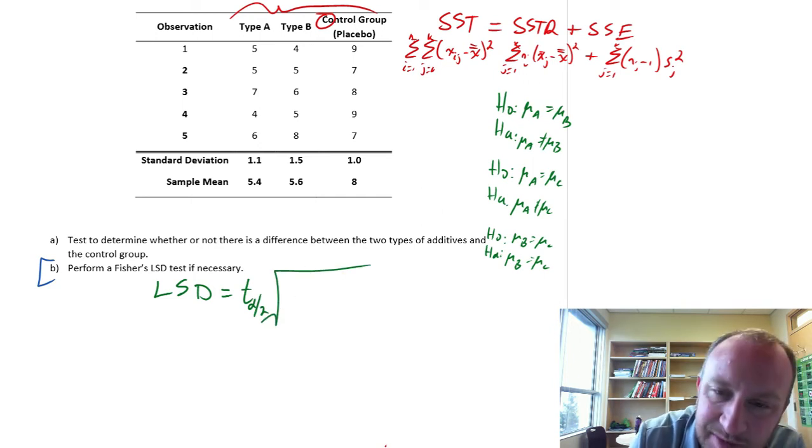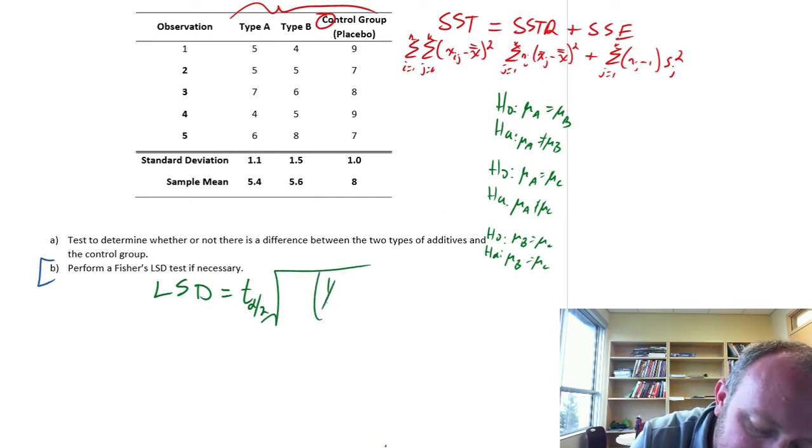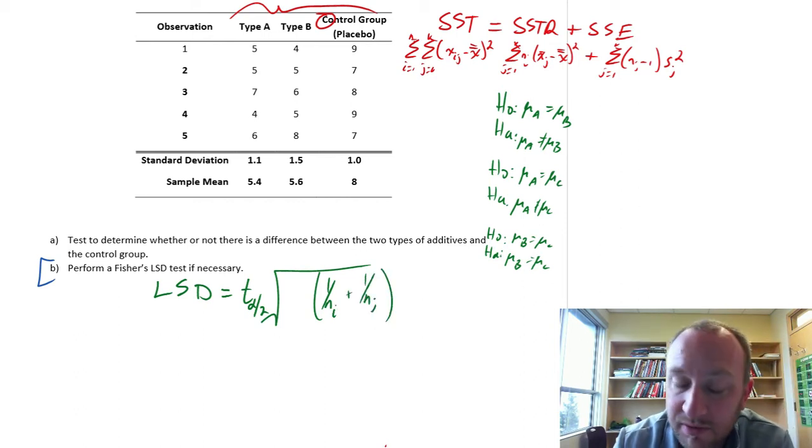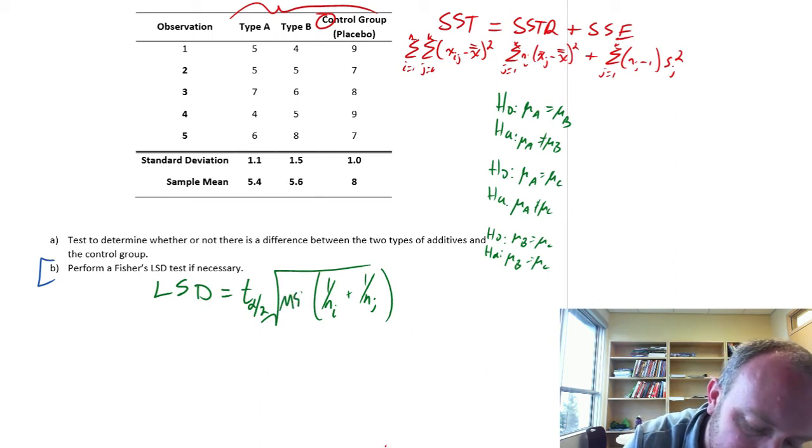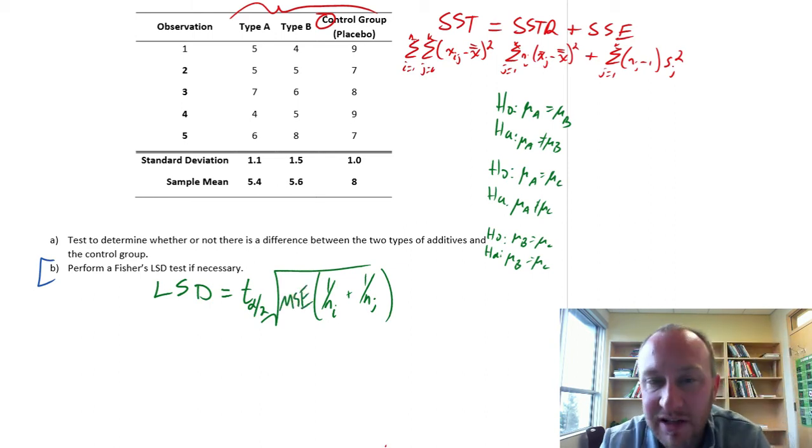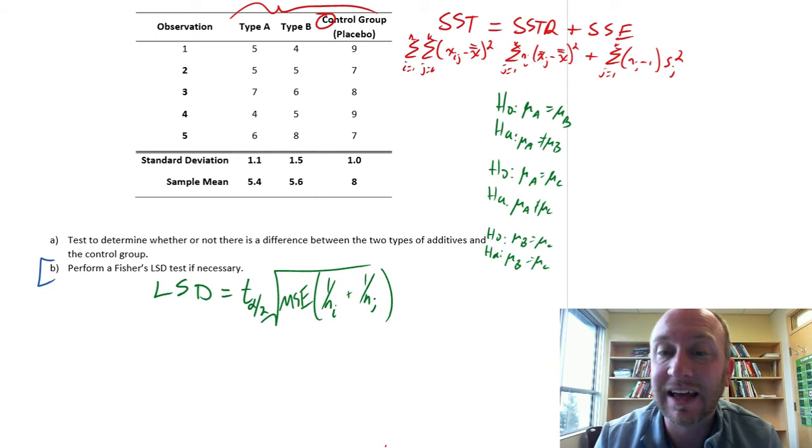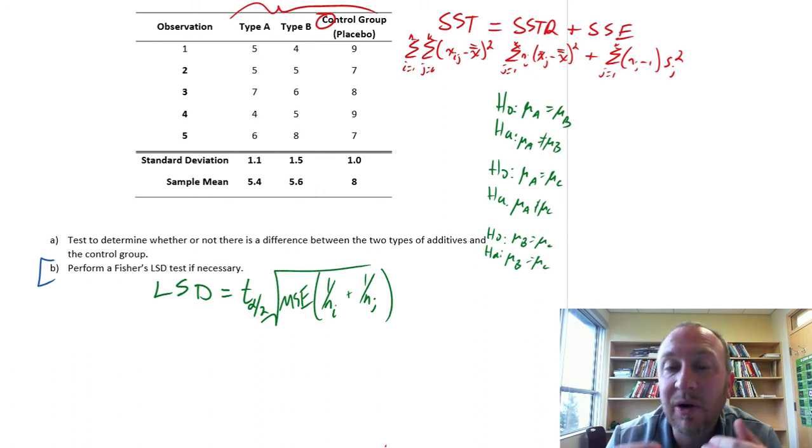First of all we'll calculate this thing called the LSD or the least significant difference. You might recognize this formula. It's very similar to what we used when we were calculating confidence intervals for two different populations. But here we have a little bit of ANOVA sneaking in there because our best estimate, our best unbiased estimate of the variance, it's not a sample variance anymore. Now it's MSE, the mean squared error, coming from our ANOVA table.